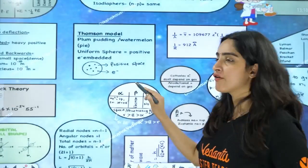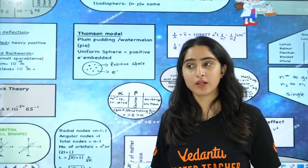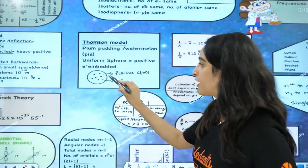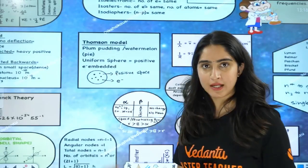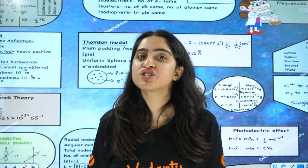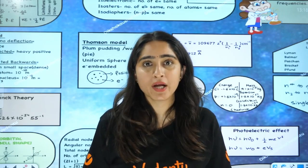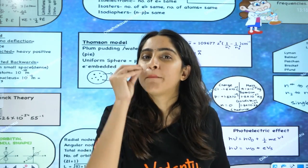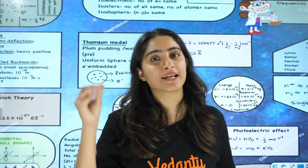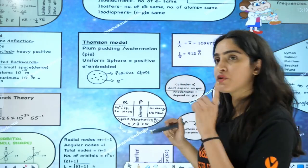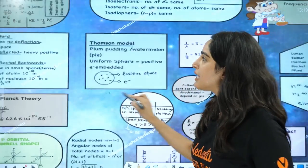First, we have the Thomson model. Thomson model states that if this is a watermelon, the red part is the positively charged sphere which is uniformly distributed, and electrons are the black seeds that are embedded in it. This was the first model.